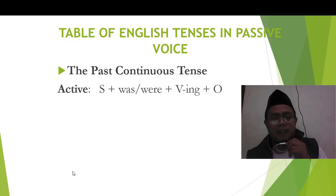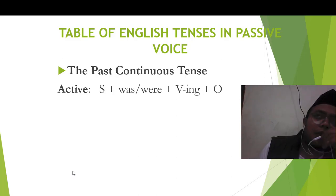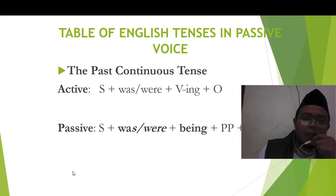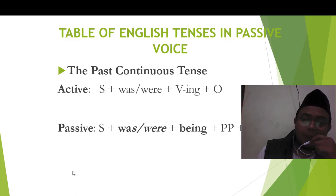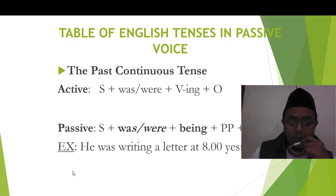The past continuous tense. Perbedaannya present dan past continuous tense dari segi polanya adalah hanya berubah to be-nya saja — yang tadinya is/am/are menjadi was/were. Begitupun yang terjadi di dalam bentuk pasifnya. Selainnya sama seperti yang terjadi di dalam present continuous tense: being plus past participle plus by plus object. Look at the example: He was writing a letter at 8 yesterday. It becomes: A letter was being written by him at 8 o'clock yesterday.